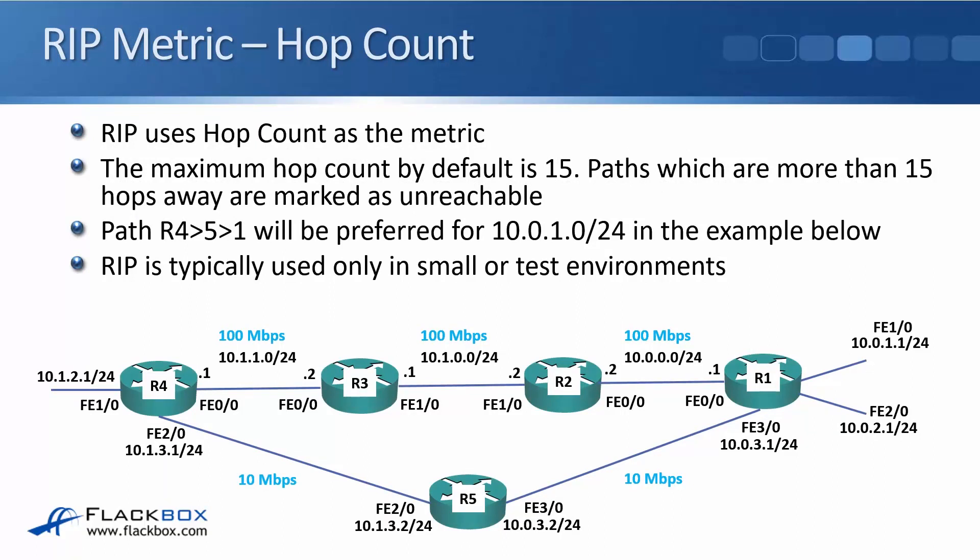Let's take a look at the different metrics used by our different routing protocols. Starting off with RIP, the routing information protocol — RIP always uses hop count as the metric. A hop means it goes through another router, so how many routers does this router have to go through to get to the destination network? The maximum hop count by default in RIP is 15, though you can change that. Paths which are more than 15 hops away are marked as unreachable by default. In the example on this slide, network 10.0.1.0/24 is connected behind R1.